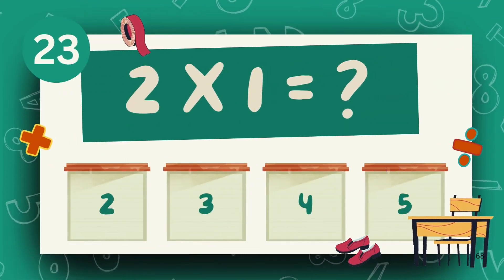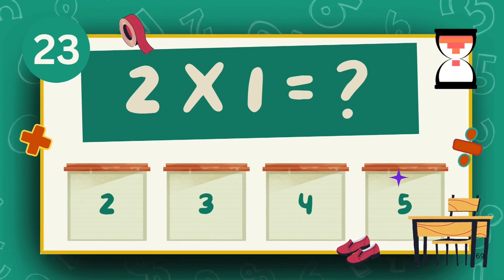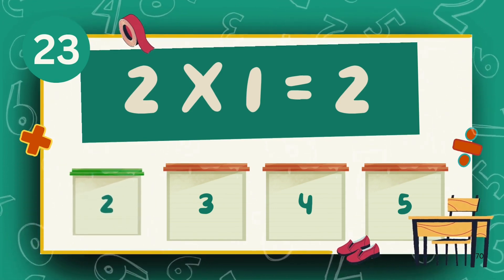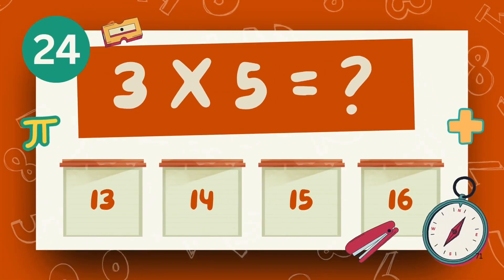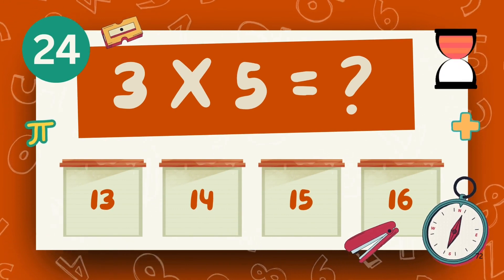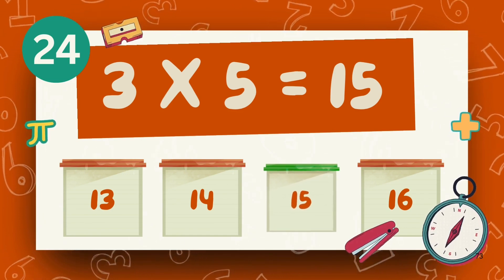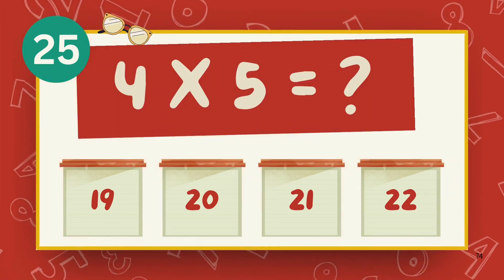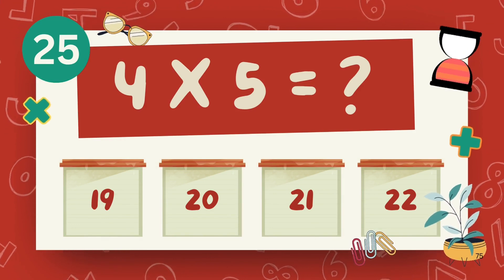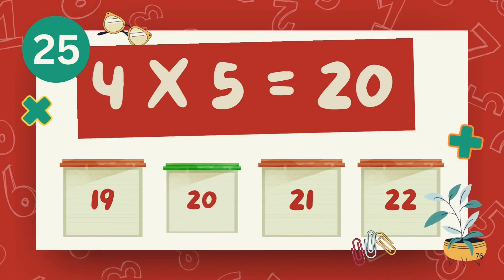What is 2 multiply 1? What is 4 multiply 5? The answer is 20.